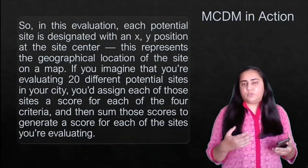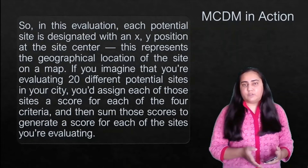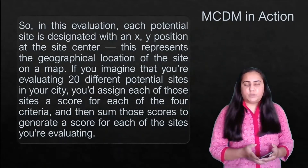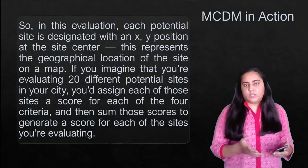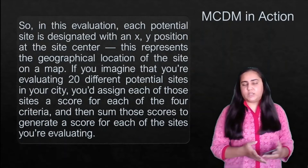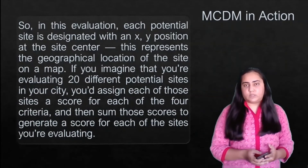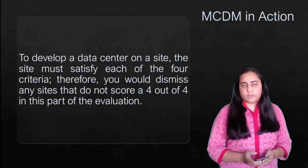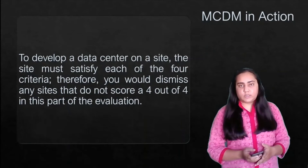Those are the criteria for decision making. During evaluation, each potential site is designated with an X and Y position at the site center, representing its geographical location on a map. If you are evaluating 20 different sites, you assign scores to all 20 based on the four criteria, and the sum of scores generates one total score per site. To develop a data center, a site must satisfy all four criteria — if the score is not four, that site is eliminated.